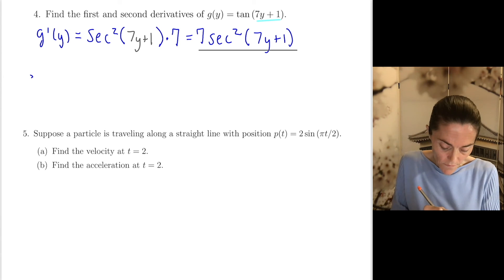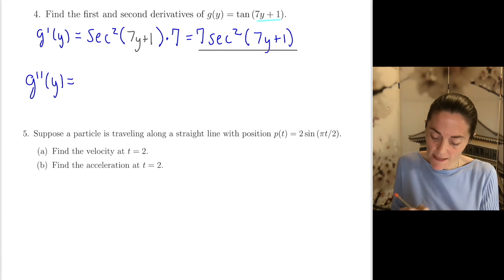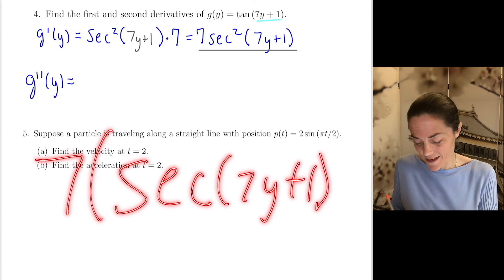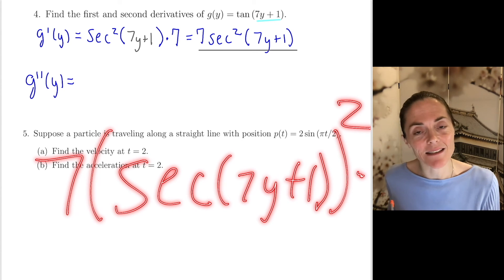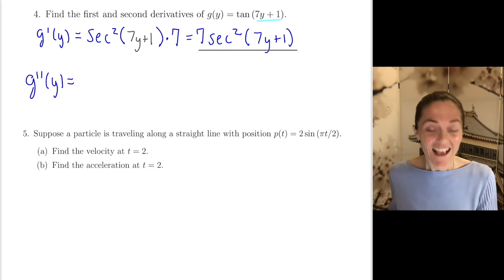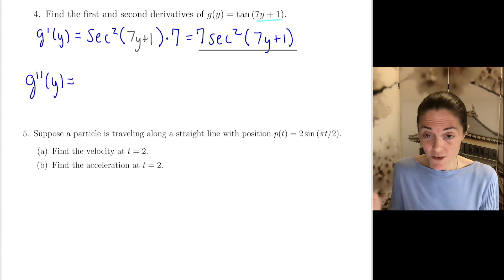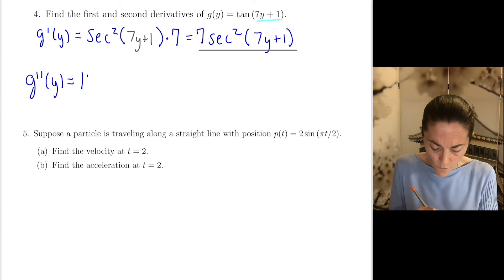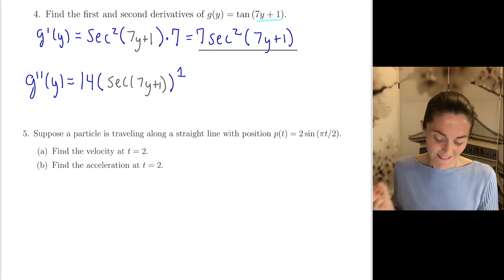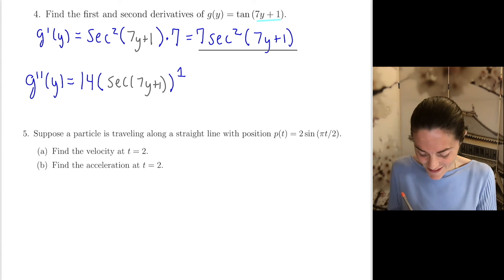Now I need to take the second derivative. This function is 7 times secant(7y+1) squared. We're going to have chain rule two times here. Our most outside function is the squared part. So let's differentiate the most outside function: we have 14, then power minus 1 is a first power, and then we put in the entire secant(7y+1). Now multiply by the derivative of the inside function.